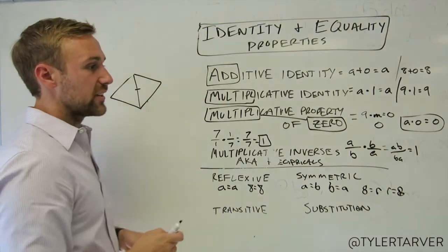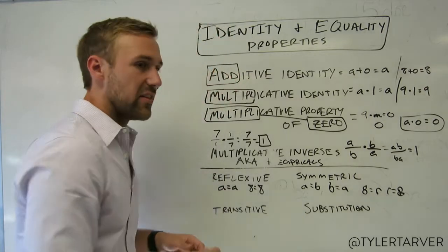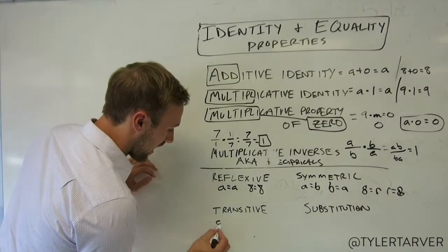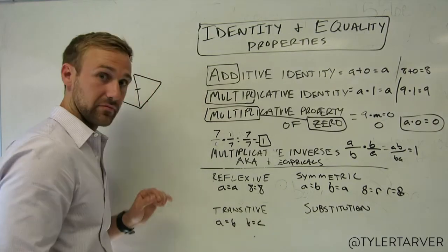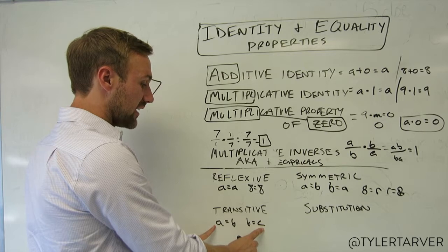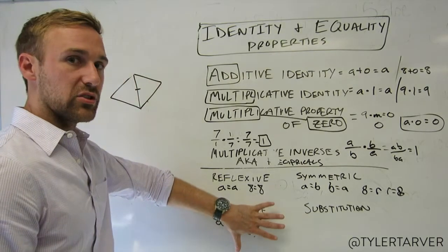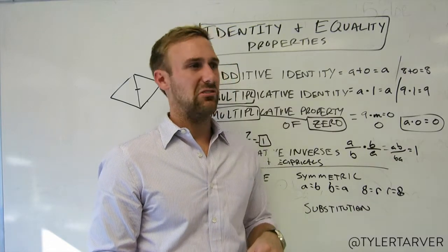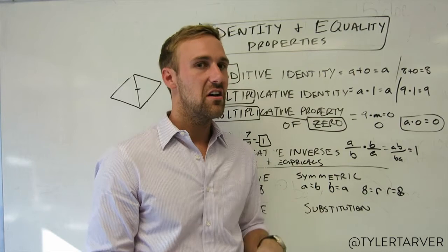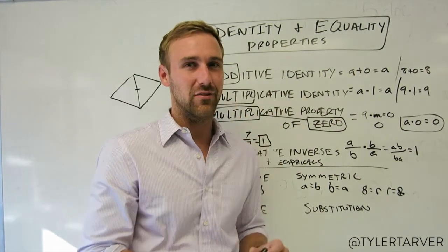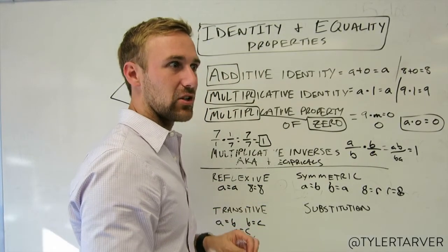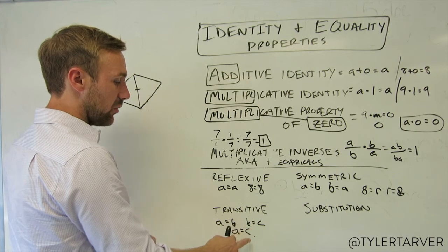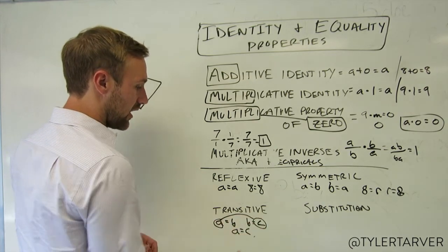The transitive property of equality — I like to call this the middleman property. The transitive property cuts out the middleman: if a equals b and b equals c, then a and c are also equal. B is their link; you can essentially cut out the middleman and make a equal to c directly. It's one of the ones you'll use more often.